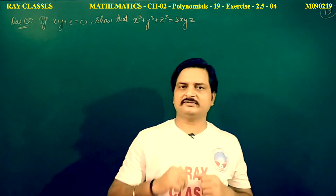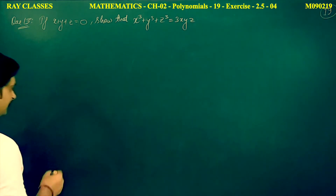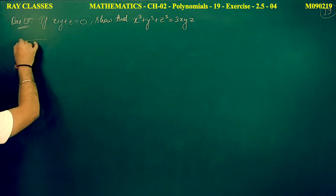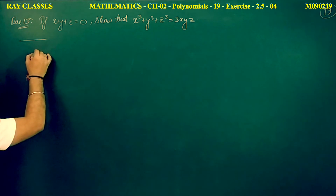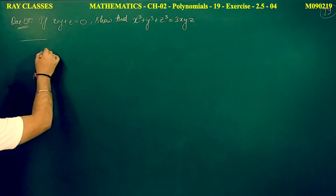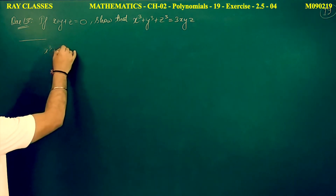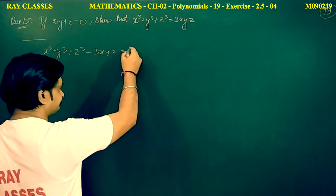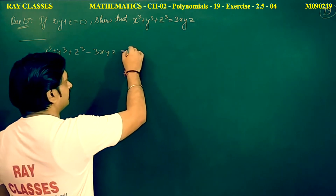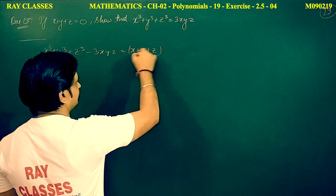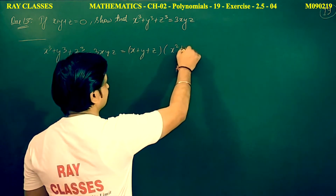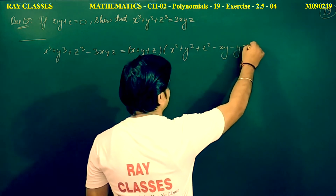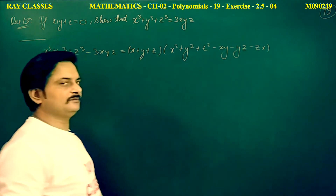The formula is: minus 3xy into z is equal to x plus y plus z, into x squared plus y squared plus z squared minus xy minus yz minus zx. This is the formula we know.